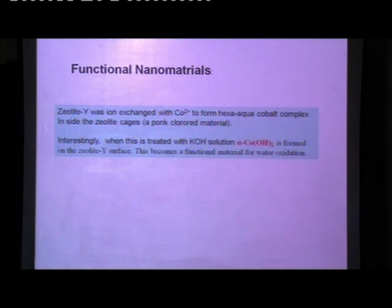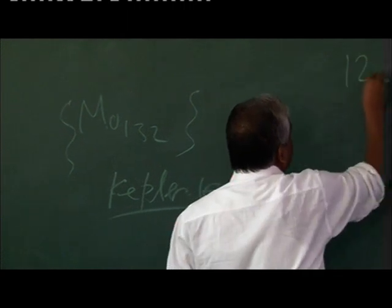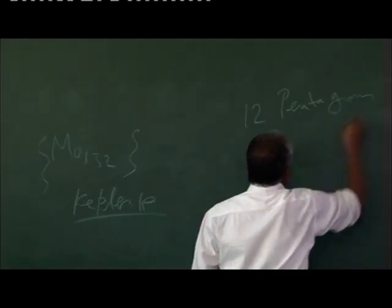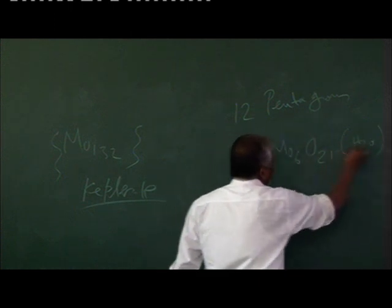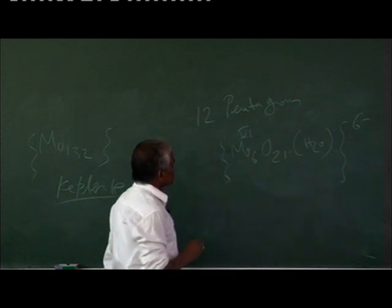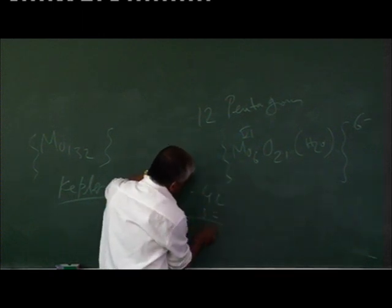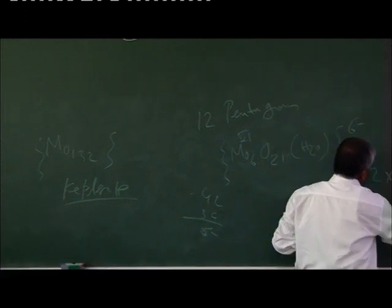The very last topic I told you about the big giant clusters. We have some things, the very big clusters. It is called Keplerate. This has one pentagon, any icosahedral structure you have to have pentagon. It is MO6O21H2, this makes one pentagon. MO6 means 72 plus, it will give 6 minus. So 32 minus and 36 plus give 6 minus. Now 12 pentagon is there, so 12 will give you 72 minus charge.